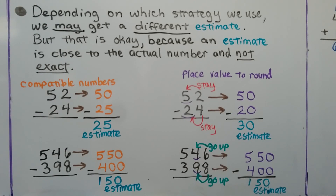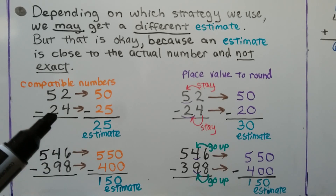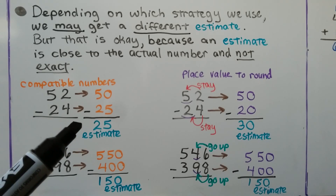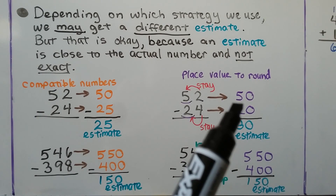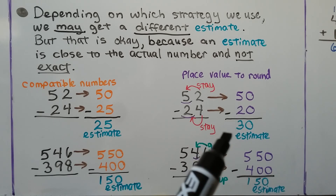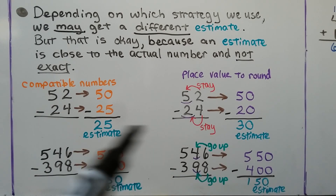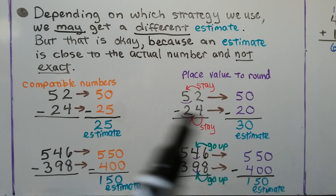Depending on which strategy we use, we may get a different estimate, but that is okay because an estimate is close to the actual number and not exact. For 52 minus 24 using compatible numbers, 50 is compatible to 52 and 25 is compatible to 24, giving an estimate of 25. But if we used place value to round to the nearest tens, 52 rounds to 50 and 24 rounds to 20, giving an estimate of 30. Same subtraction problem, different estimates depending on which strategy we use.